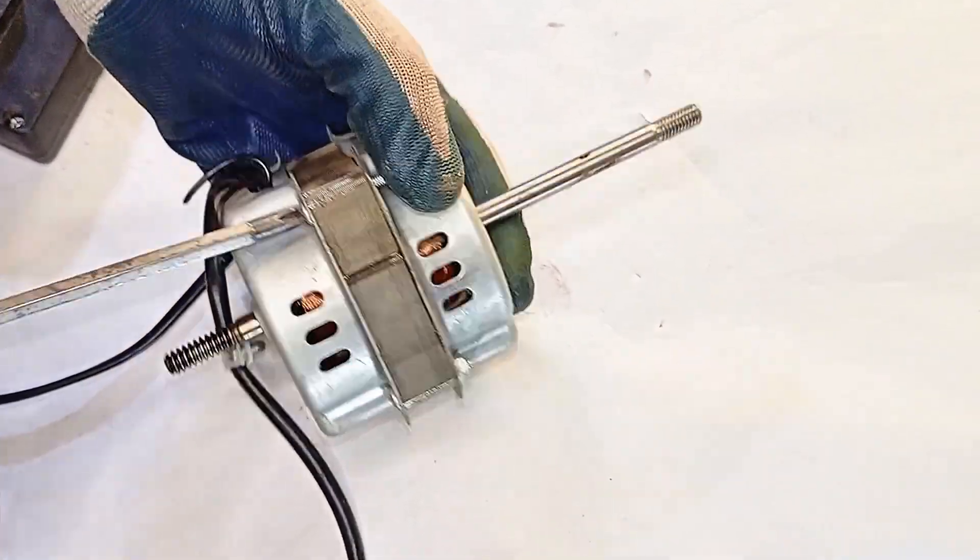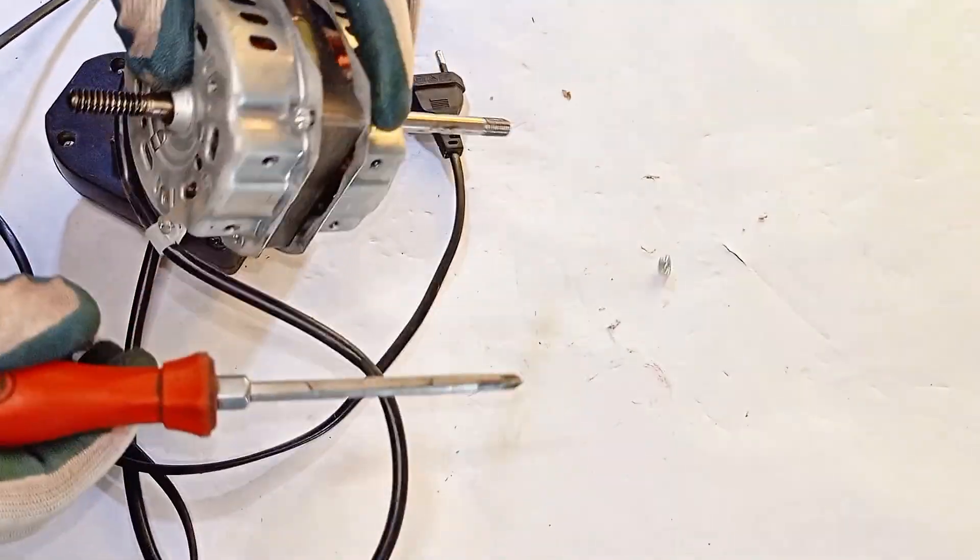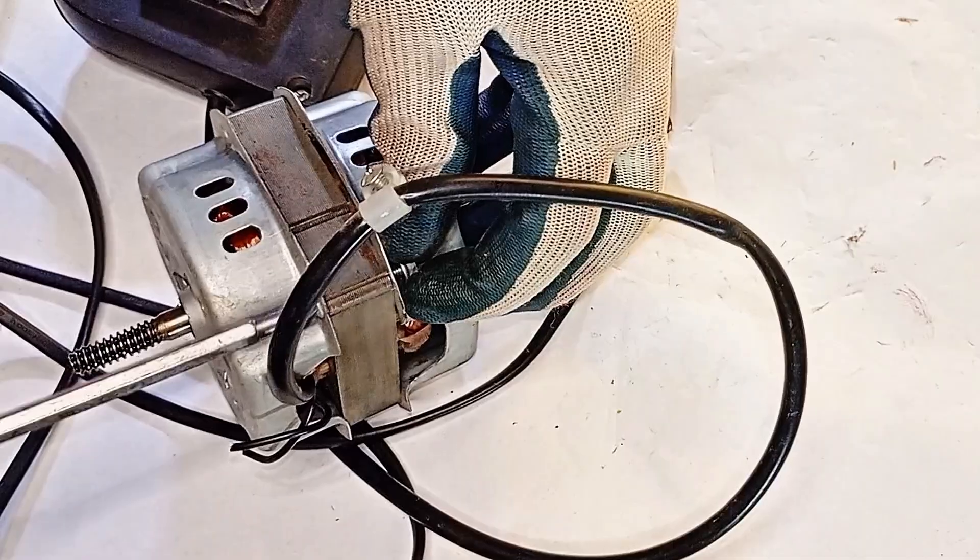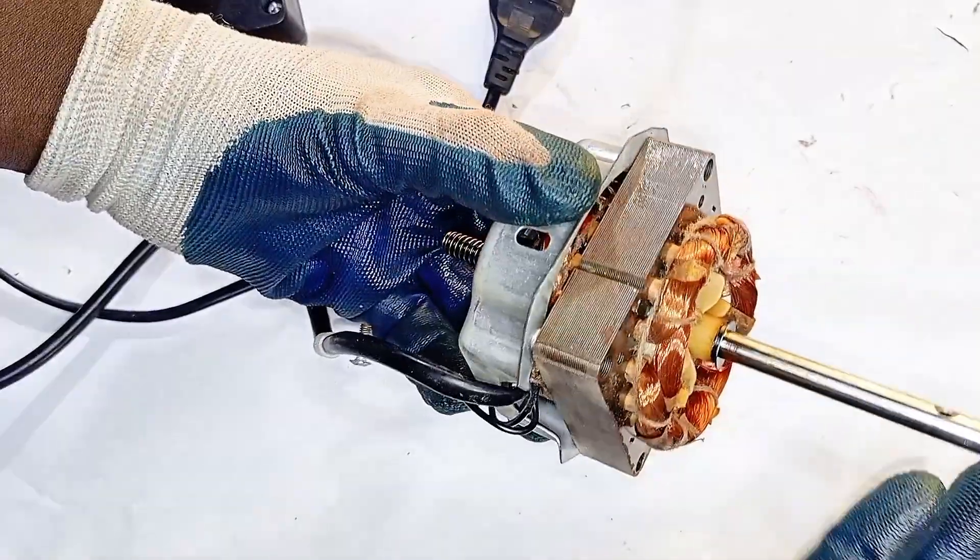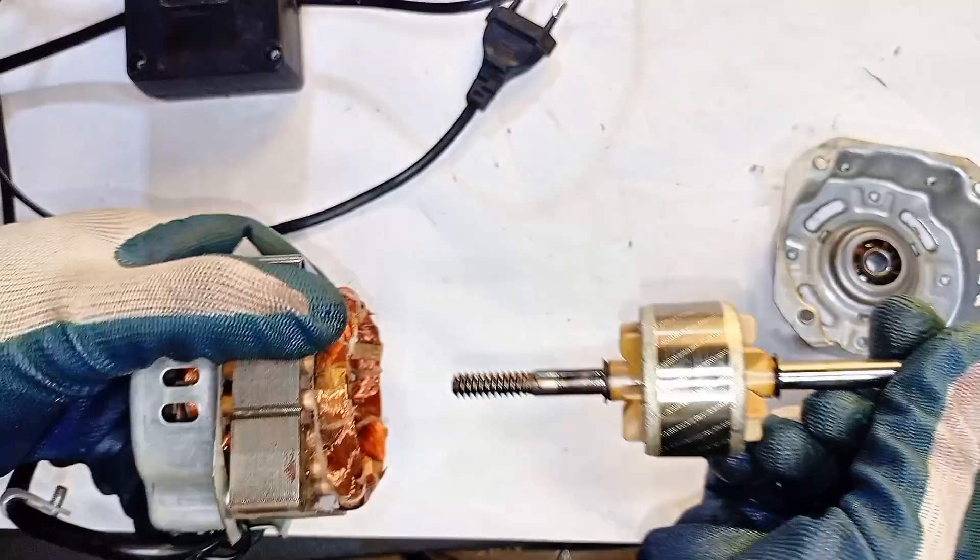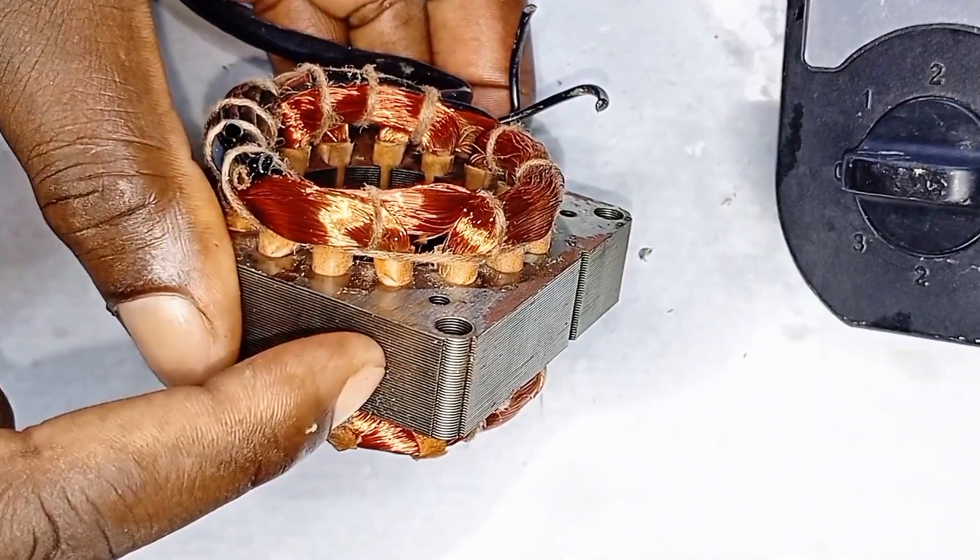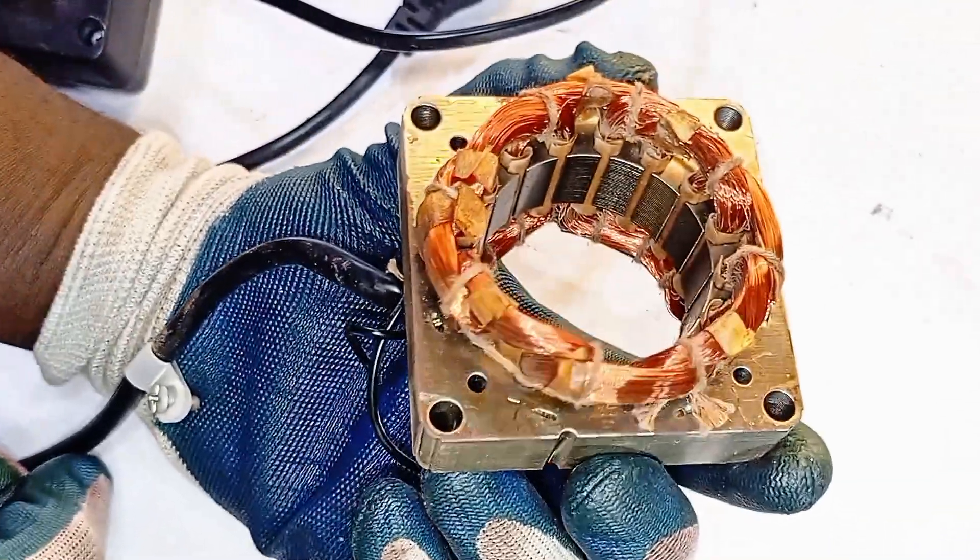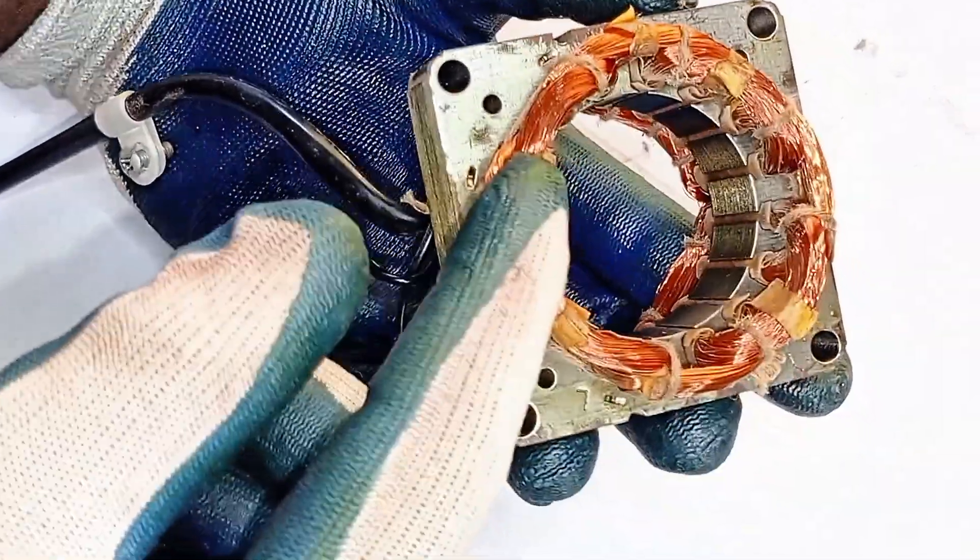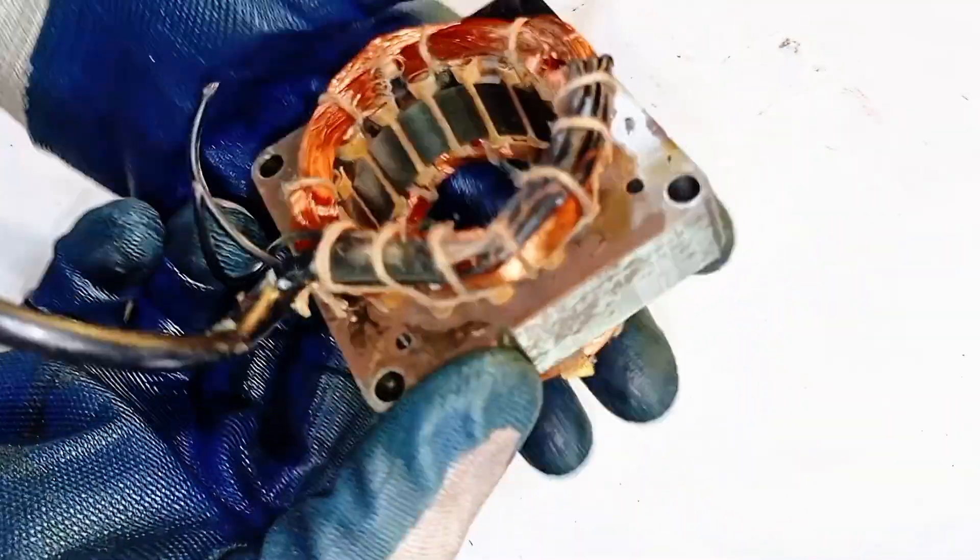We've ruled out the gearbox. Now it's time to face the most suspicious part—the motor. Let's see what it's been hiding. With the motor finally open, take a look at the stator. This is where electricity becomes motion, but it's also where damage hides. Be gentle—dropping it or touching those exposed wires could ruin the entire motor. Let's look for signs of burning, broken windings, or loose wires.